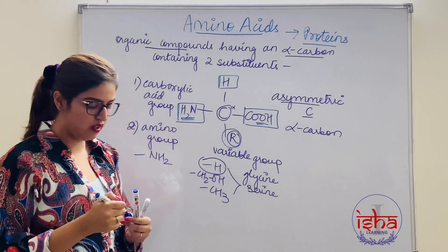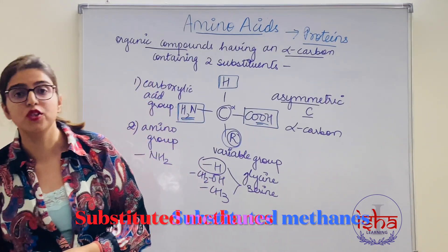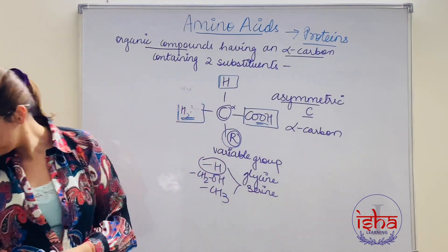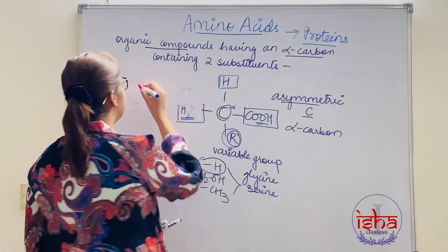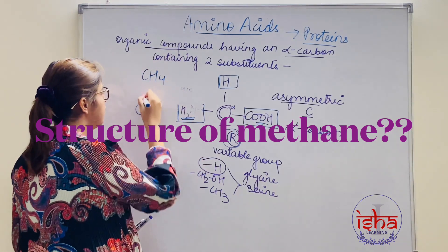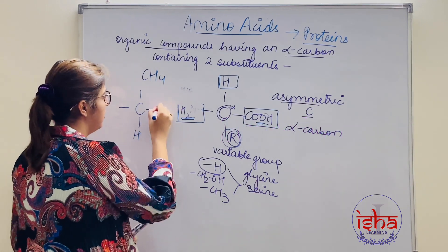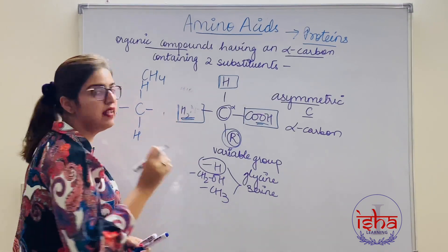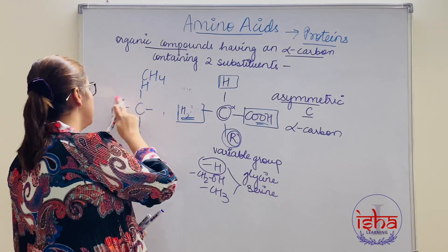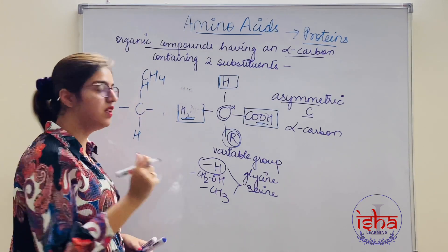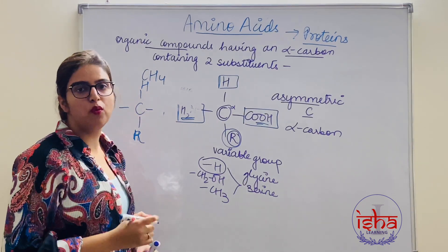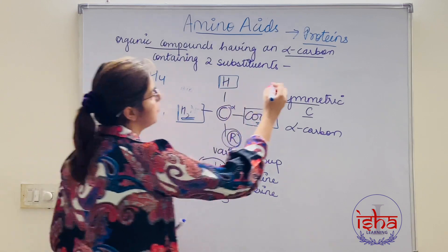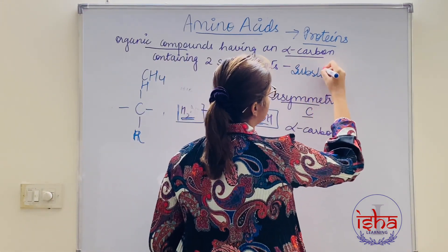Amino acids are called substituted methane. The structure of methane is a carbon with four hydrogens. In an amino acid, one hydrogen is substituted by the carboxylic acid group, another by the amino group, and the third by the variable R group — and that is how we get an amino acid. That is why it is called a substituted methane.